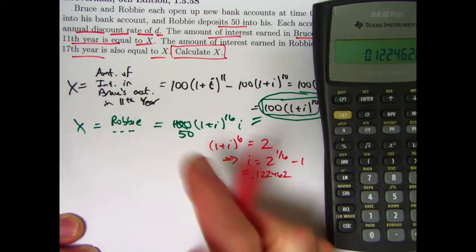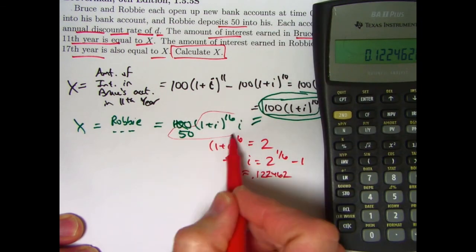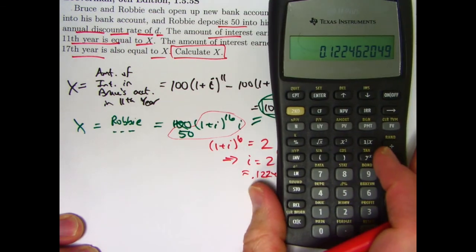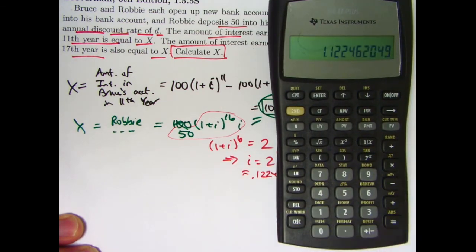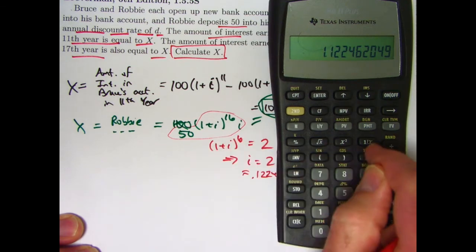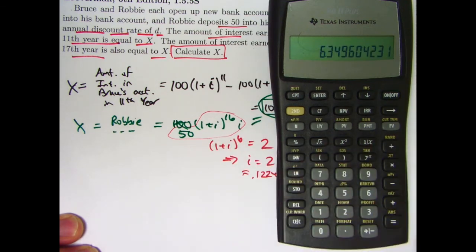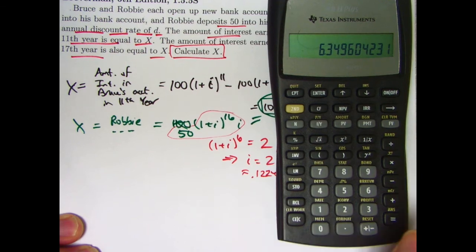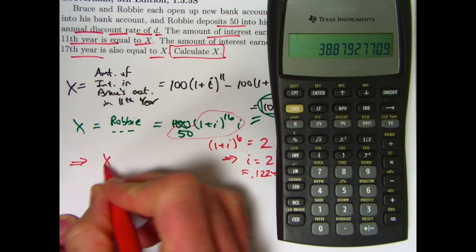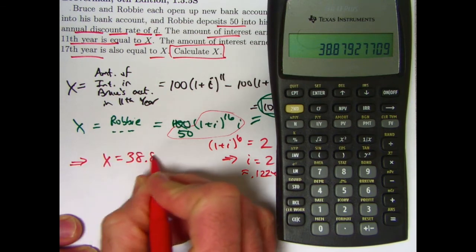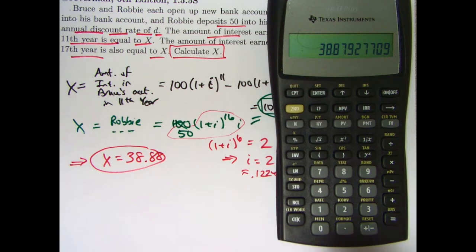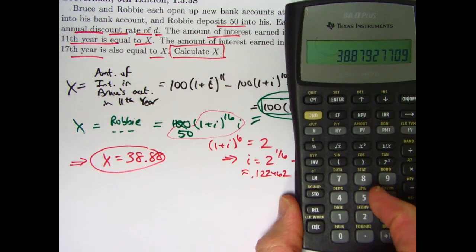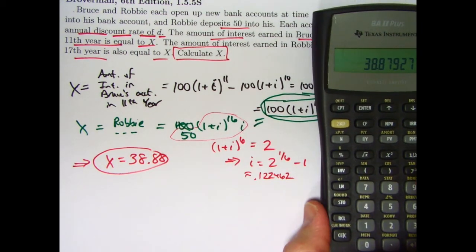I need to figure out x now. I can again use either expression. I think I'll use this expression. So let's add 1 to that. Raise it to the 16th power. Multiply by i. Multiply by what's in register 0 times recall 0. And then times 50. x looks to be 38.88. And that is correct. That is the amount of interest earned during those years for Bruce and Robbie respectively.